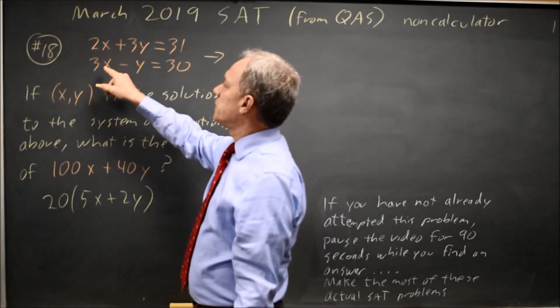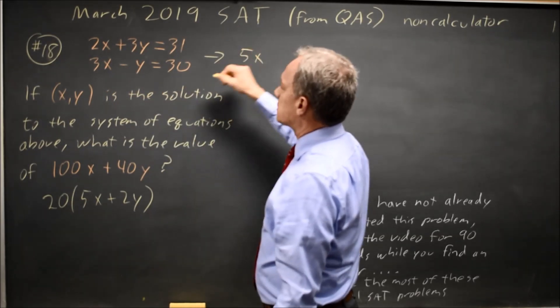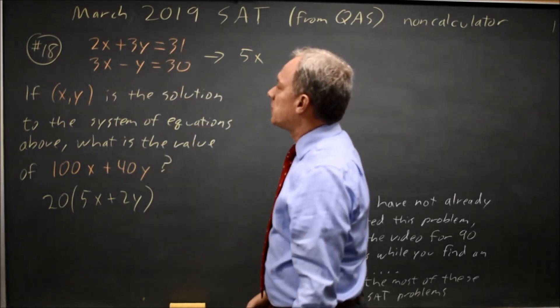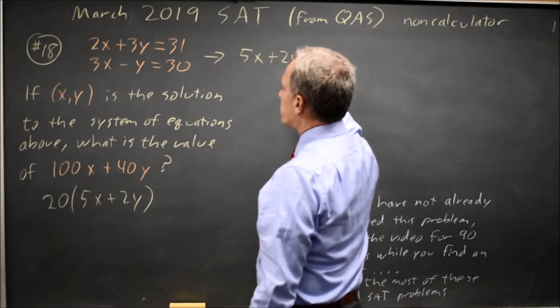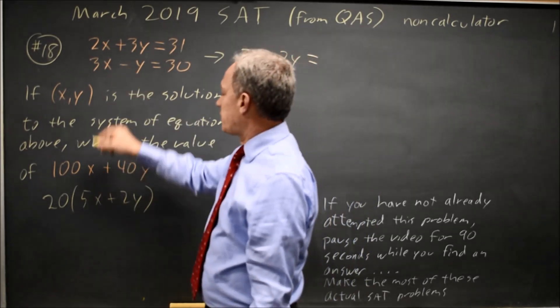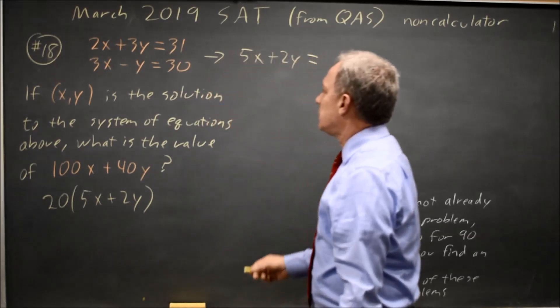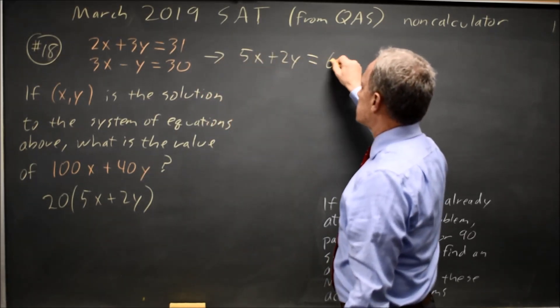So adding these, 2X plus 3X is 5X. 3Y minus Y is 2Y. So this is in fact 5X plus 2Y if I add the left-hand sides. If I add the right-hand sides, I get 61.